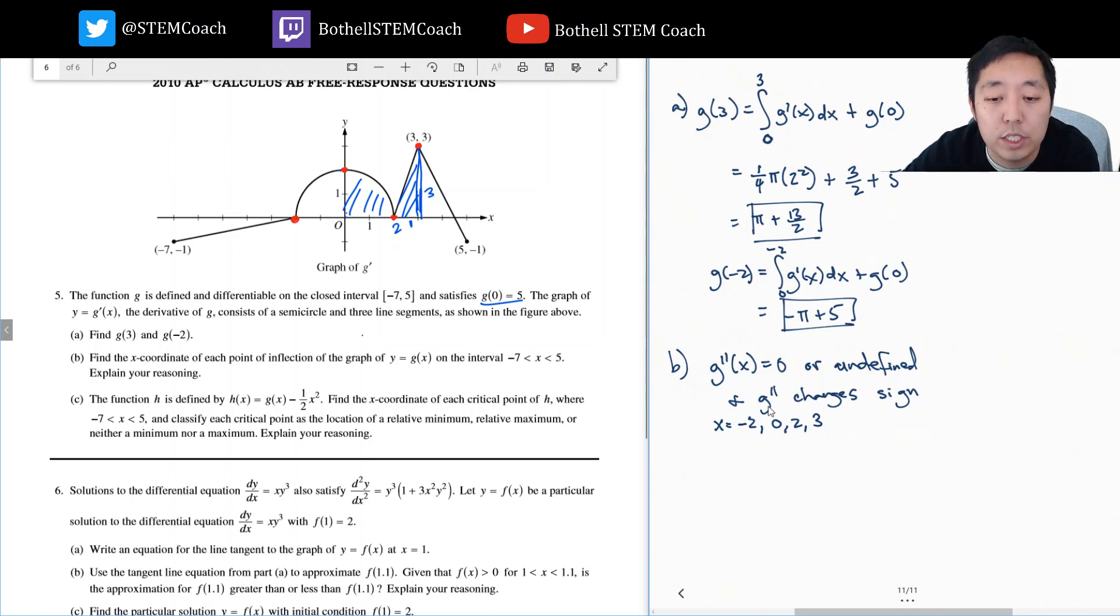Now I have to see when g double prime changes signs. This slope goes from positive to positive, so this doesn't count. Here it's positive slope to negative slope, so we do this one. This is negative slope to positive slope, so that's fine. And this is positive slope to negative slope, so that's fine. So x equals zero, two, and three.